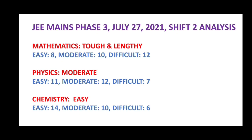As far as Mathematics is concerned, the questions are too lengthy, tricky, and tough altogether. The total number of easy questions is very small, moderate questions are a tiny number, and difficult questions are 12. The Physics paper is said to be balanced and moderate — the total number of easy questions here are 11, moderate questions are 12, and difficult questions are 7.